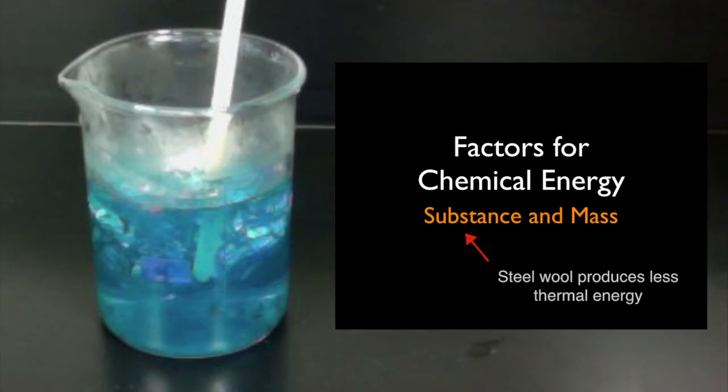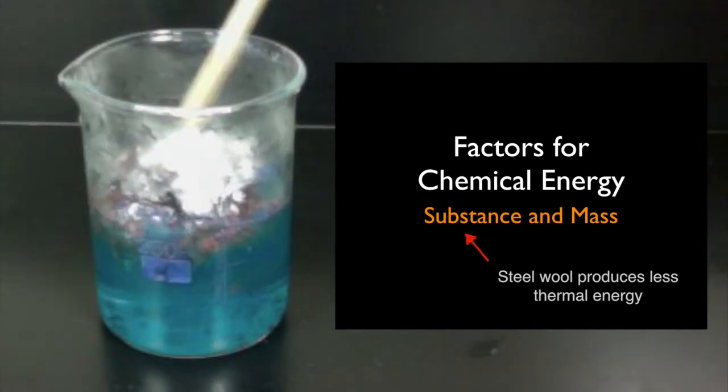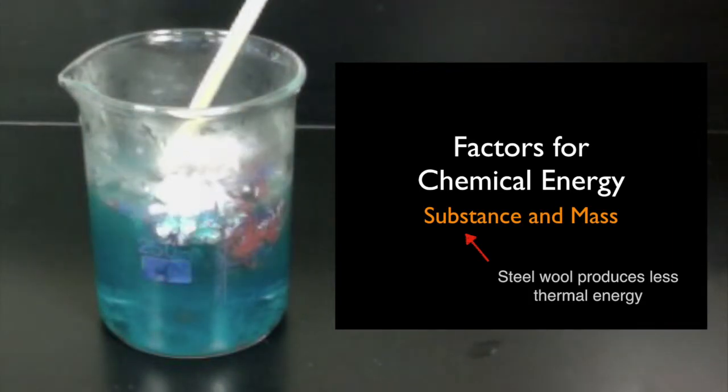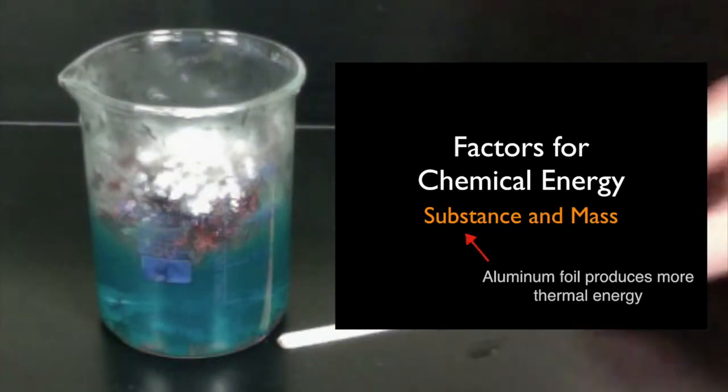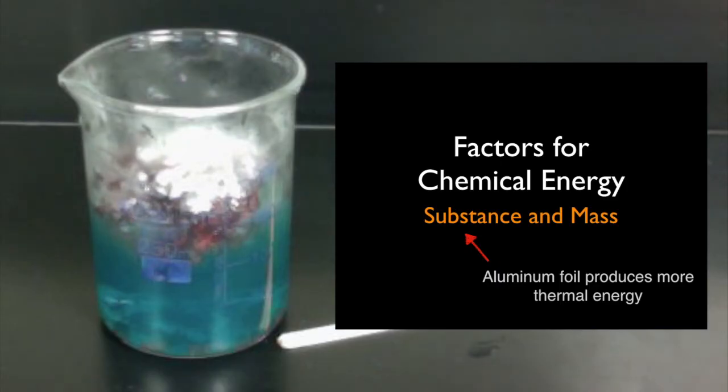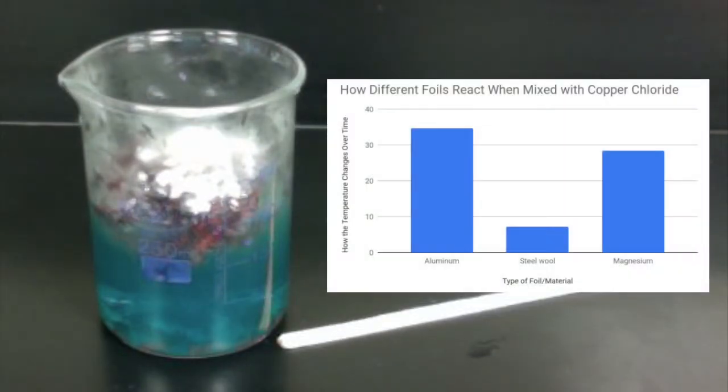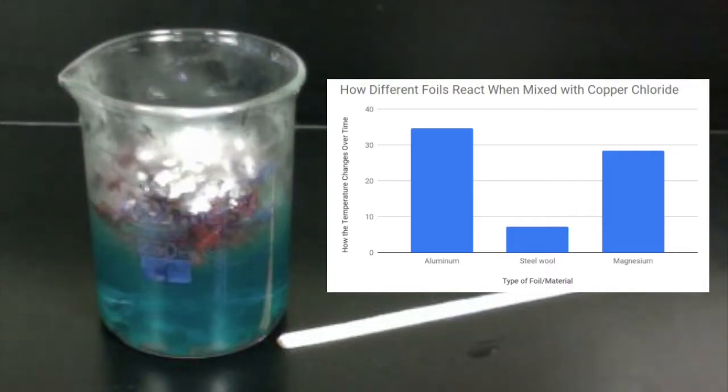The factors that affect chemical energy are the substance and the mass. Substance meaning that steel wool produces less thermal energy, and aluminum foil produced more thermal energy in the reaction. The results from Investigation 10.1 showed how substance can make a very big difference in how much energy is available to us. The aluminum foil had a much different result than the steel wool.